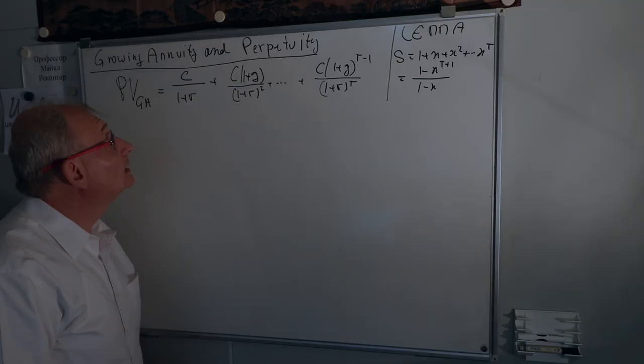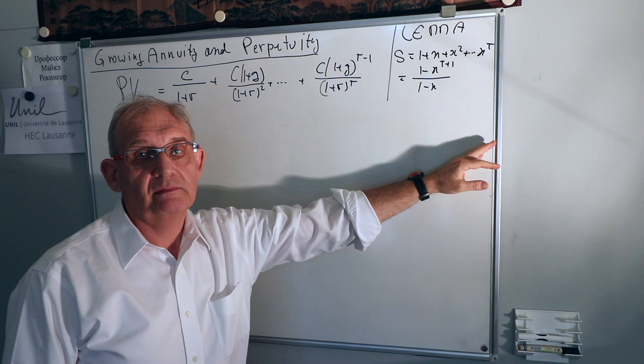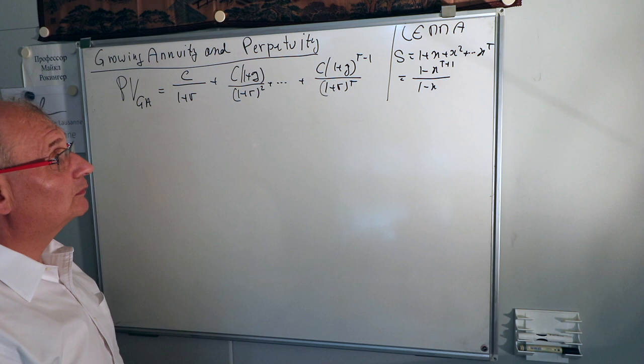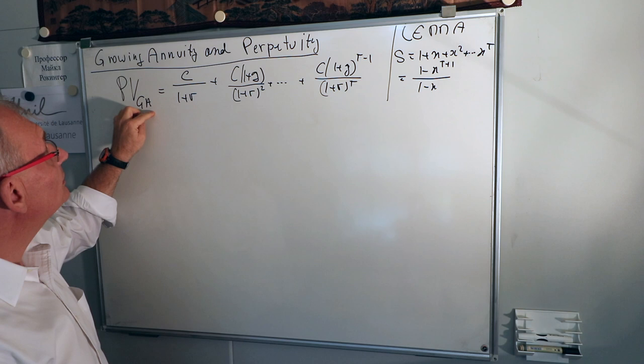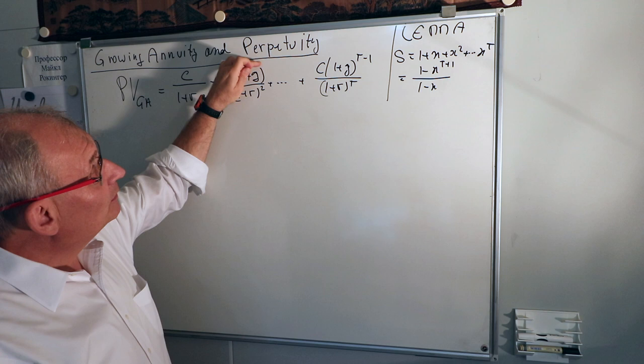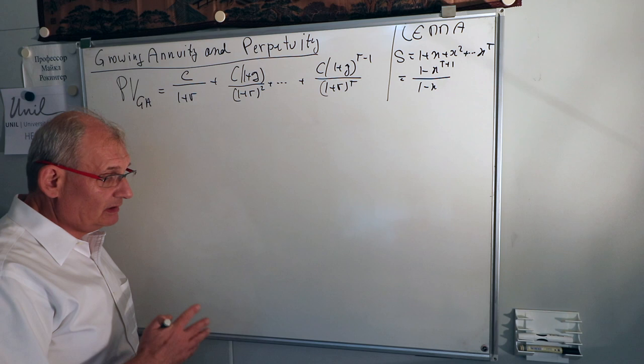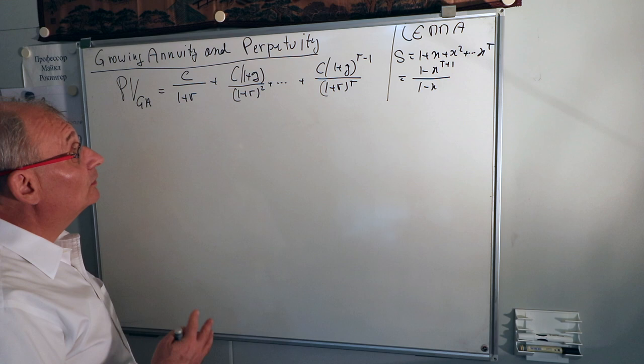Now let's treat the growing annuity and perpetuity. We still have the lemma giving the sum of a finite number of growing terms at progression x. We want to compute the present value of the growing annuity: c divided by (1+r), then c grows by (1+g), so the next term has (1+g) in the numerator and (1+r)^2 in the denominator. The last term has (1+r)^t and (1+g)^(t-1). The computations are identical to the non-growing case.